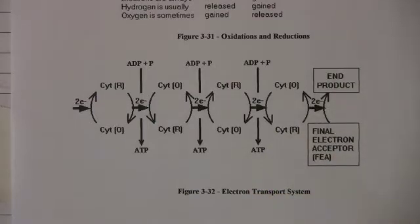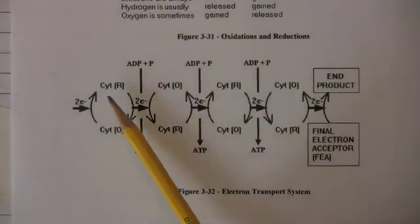This is shown in figure 3-32 in your study guide. Now the essence of the electron transport system is a system of cytochromes, and in this diagram we'll abbreviate them CYT.